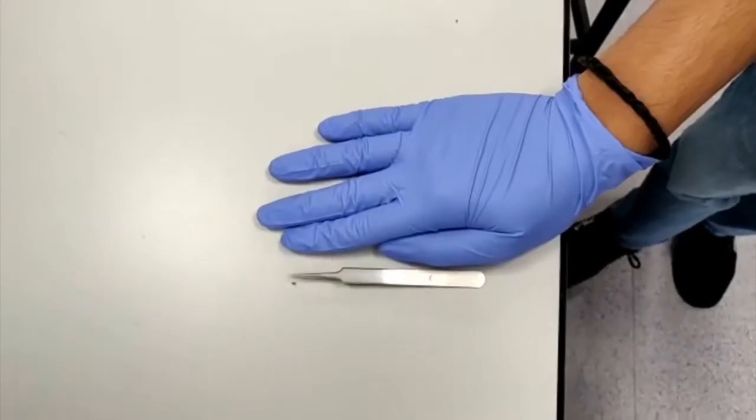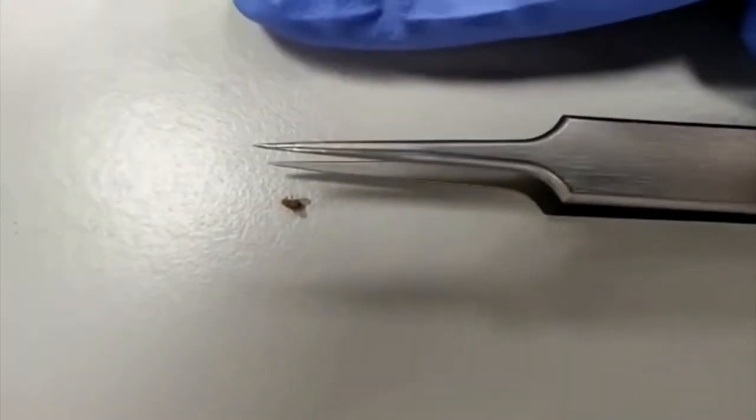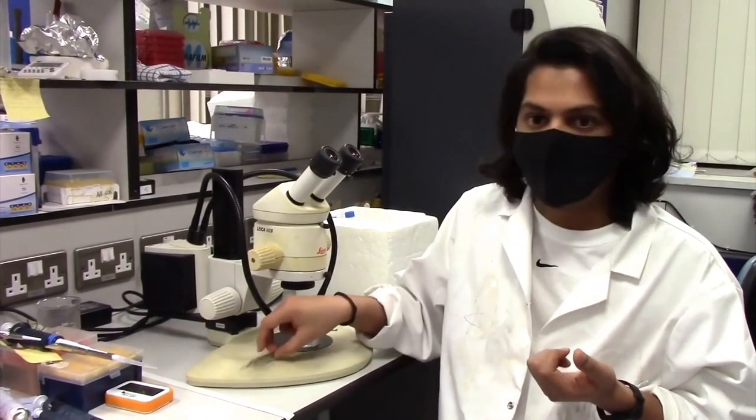To understand how fungi affect the brain, we need to have a clear view of the fly brain. But how do we do that? Because they are so tiny. The average size of the fly is three millimeters. So to dissect the fly brain, I use a stereomicroscope and a razor-sharp forcep.